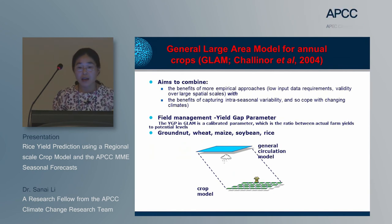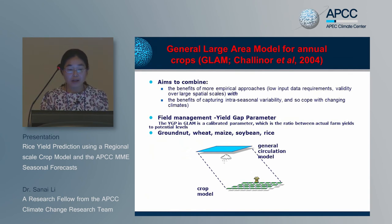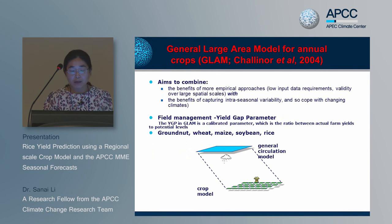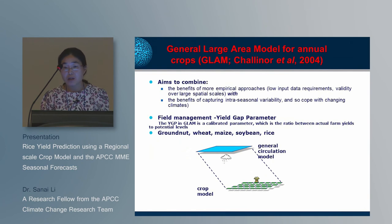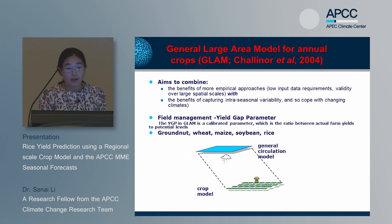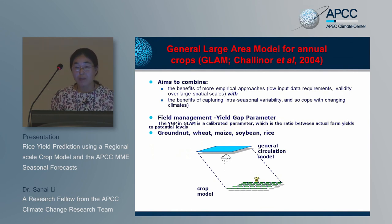The General Large-Area Model for annual crops, GLAM, has benefits of low input data requirement and capability for large area simulation. In GLAM, field management can be replaced by a yield gap parameter, which is a calibrated parameter representing the ratio between actual farmer yield and potential yield. Currently, the GLAM model can simulate groundnut, wheat, maize, soybean, and rice.